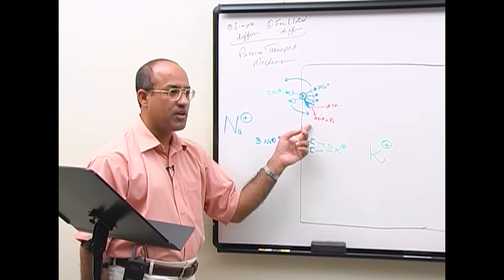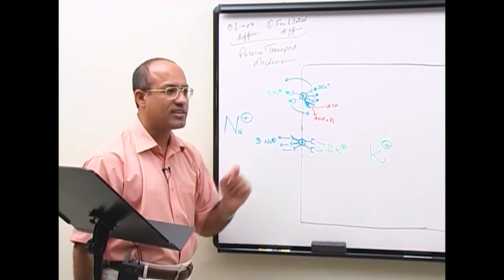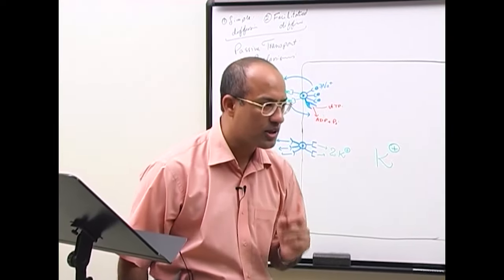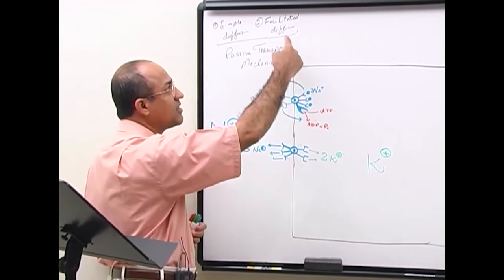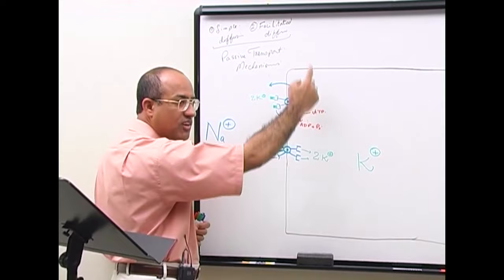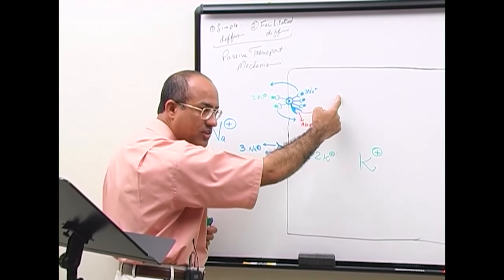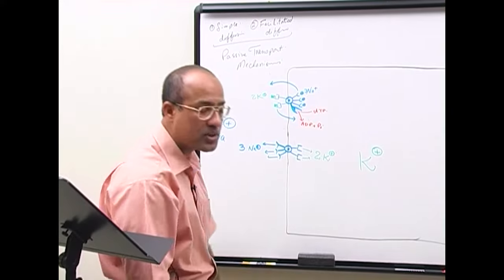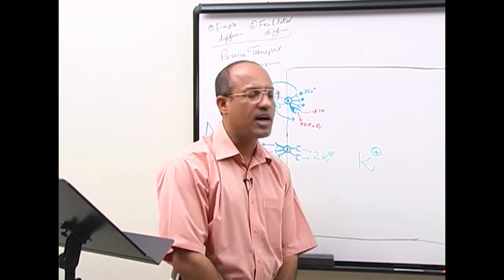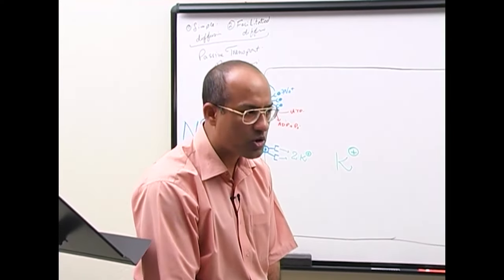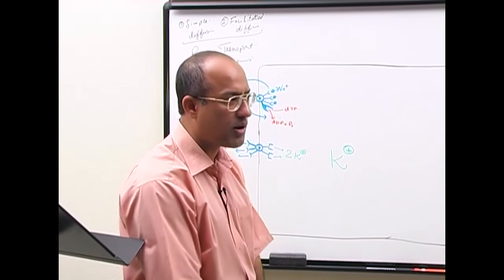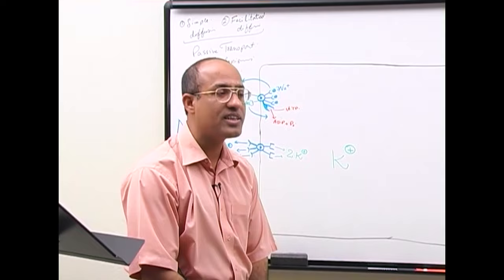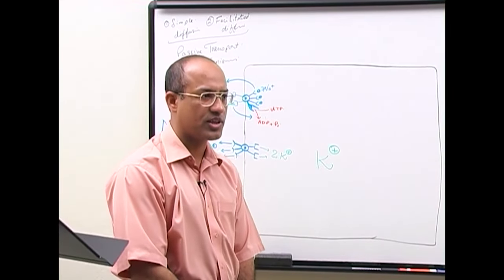In any transport mechanism when energy is utilized, that mechanism is active transport. Simple diffusion was passive transport. Facilitated diffusion was also passive transport because substances move from high concentration to low concentration. But when we talk about sodium-potassium ATPase, ions are moving against the concentration gradient.